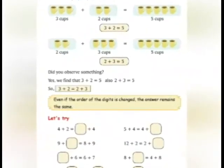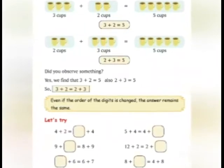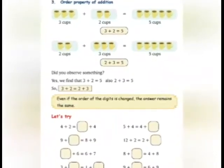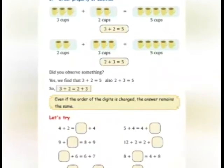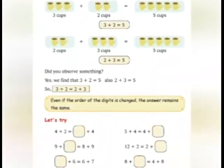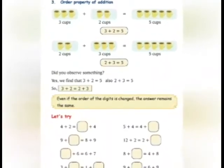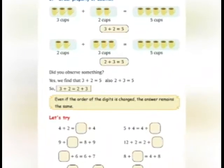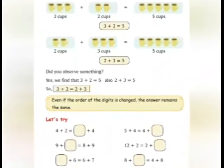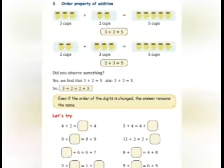Let's try. See, in the first: 4 plus 2 is equal to dash plus 4. 4 plus 2 करेंगे, तो उस dash में क्या आएगा? Yes, very good — अगर 4 plus 2 है, तो is equal to 2 plus 4. Next one: 5 plus 4 is equal to 4 plus — yes, very good — 5.